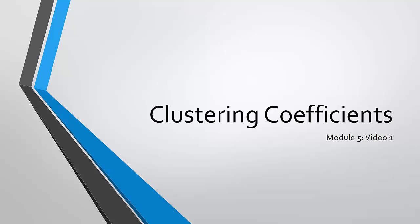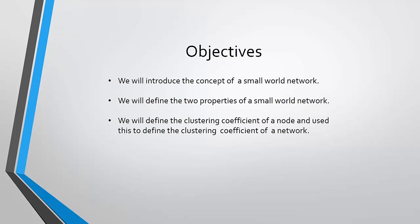This is the first video of module 5. In this video we're going to introduce the concept of a small world network. We'll define the two properties that a small world network has. One of these is the clustering coefficient. We will define the clustering coefficient of a node and then use this to define the clustering coefficient of a network.